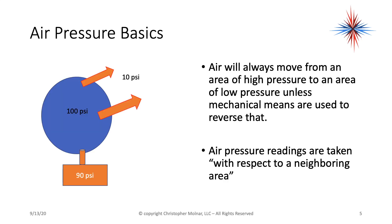Let's review some air pressure basics. Air will always move from an area of high pressure to an area of low pressure, unless mechanical means are used to reverse that — in other words, a fan or blower motor. Air pressure readings are always taken with respect to a neighboring area. For example, if I have 100 psi inside a ball and 10 psi surrounding it, the reading will be 90 psi. It's a comparison reading.